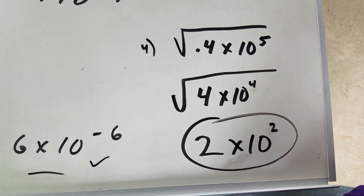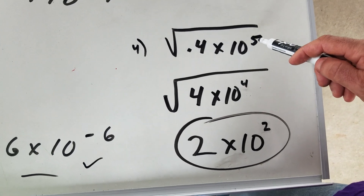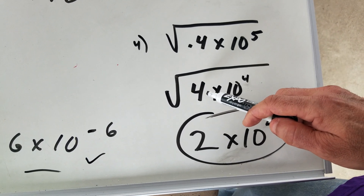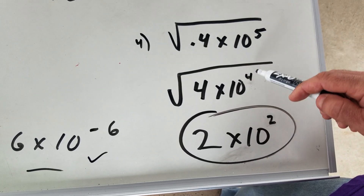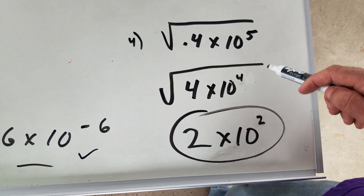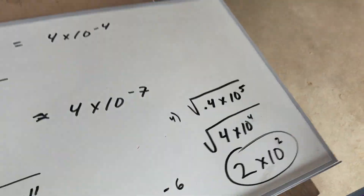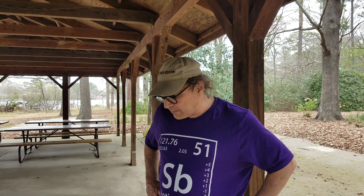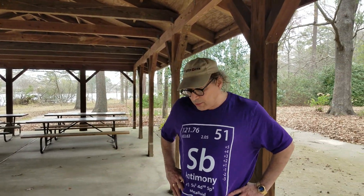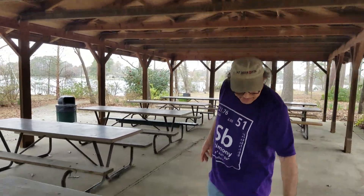What if I did the square root of 0.4 times 10 to the 5th? The minute you see it's an odd exponent, we're going to rewrite this. Move the coefficient up by 10, move the exponent down by 10. So 0.4 becomes 4, and the exponent goes to the 4th power. Square root of 4 is 2. Square root of 10 to the 4th is 10 to the 2nd. So you get 2 times 10 to the 2nd. I hope that gives you a good idea on how to approach problems like this. Make sure you can do square roots, especially for the Gen Chem section.